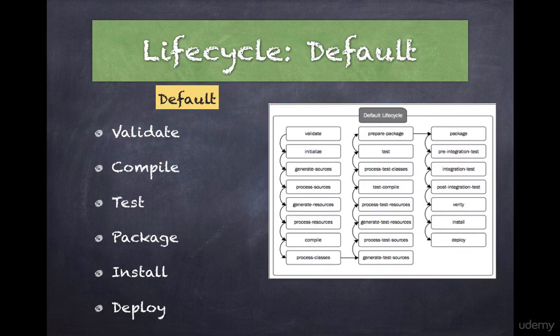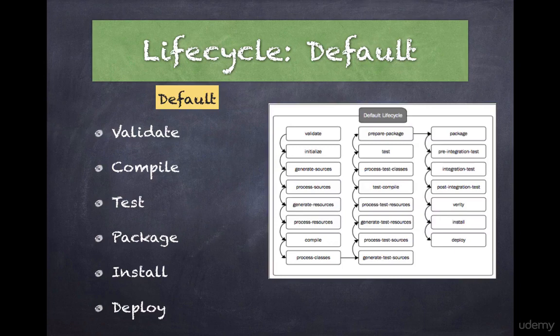Then there is the package phase. Package assembles the compiled code into a distributable format such as a jar or war file. In your POM XML, where it says packaging, you define what type of package you want the code zipped into — it could be a jar file, a war file, or even a Maven plugin.